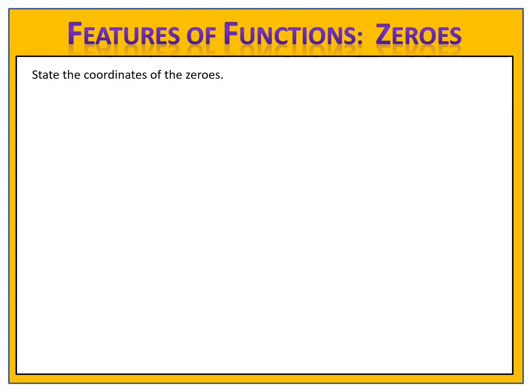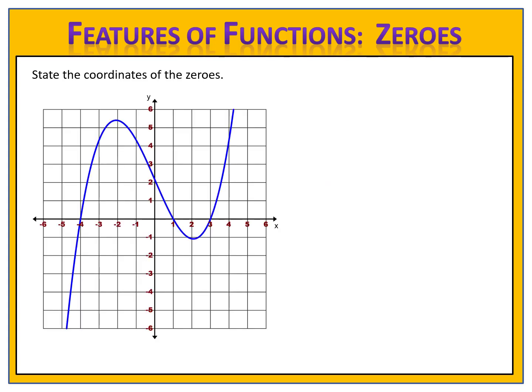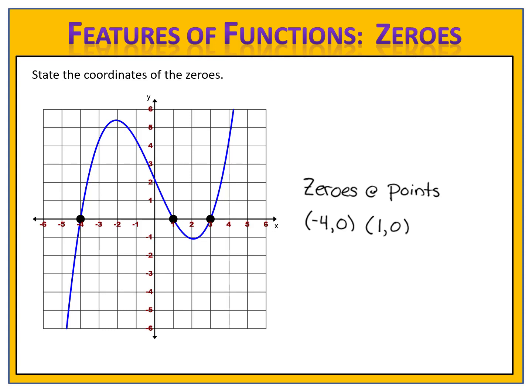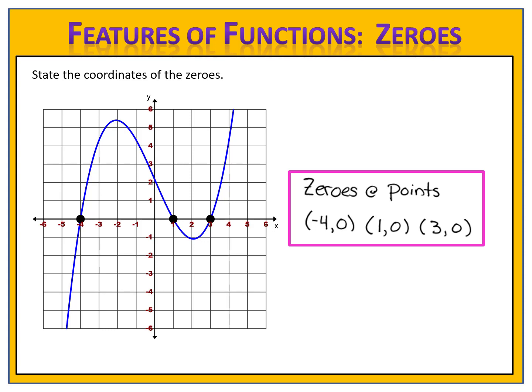Let's try another exercise. Here we have an interesting function. Can you state the coordinates of the zeros? We look along the x-axis and see that there are three zeros for this function. The zeros are at the following points: negative four, zero; one, zero; and three, zero. These are the coordinates of the zeros.